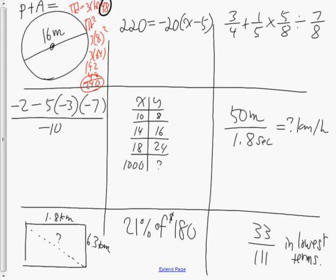Here we have a distributive property problem. I'm going to divide both sides by negative 20, leaving x minus 5 on one side and 11 on the other. Then I add 5 to both sides, and x equals 16.